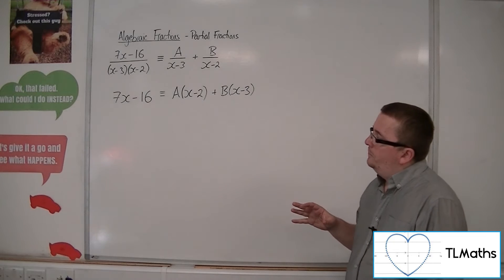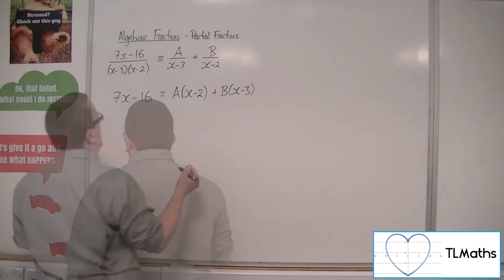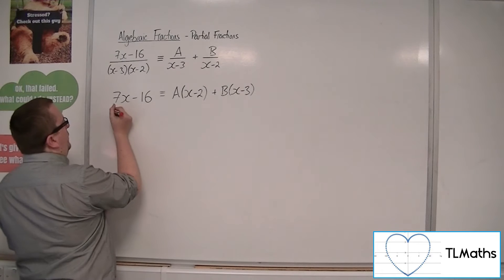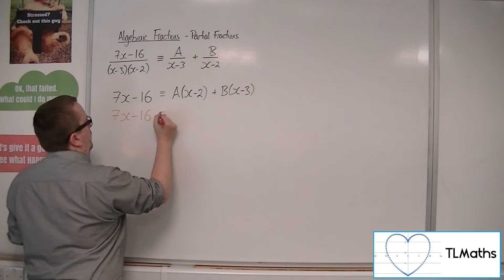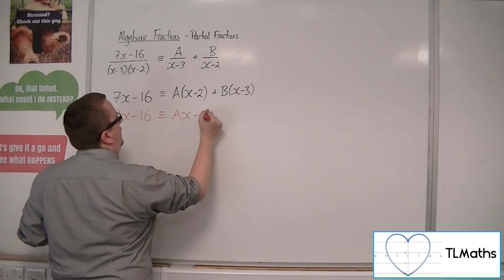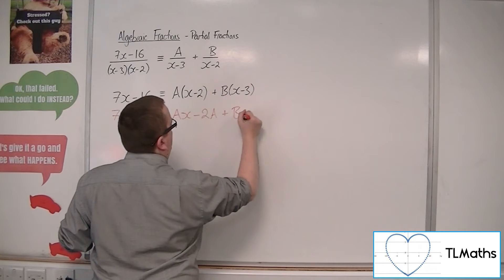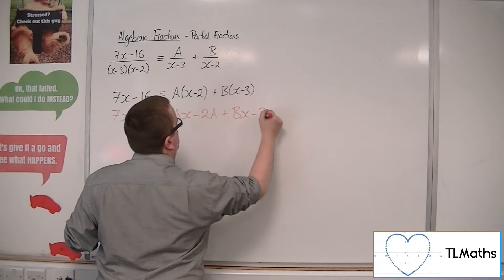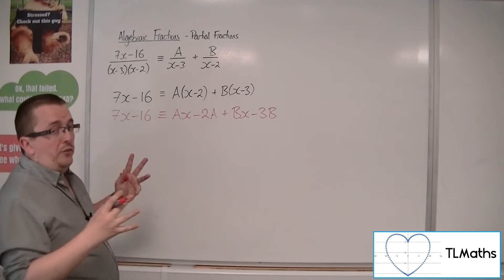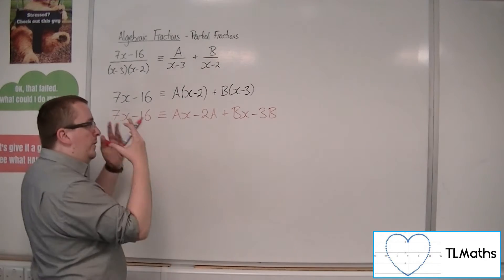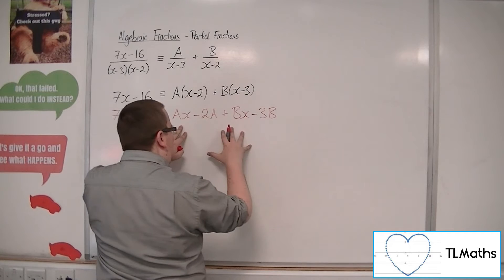So this is how it works. Multiplying out the right-hand side, I'm going to have ax minus 2a from that bracket and bx minus 3b from that bracket. Now the next stage is to bring like terms together — so the x terms together.